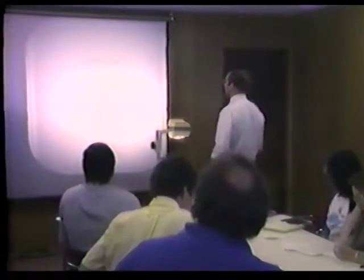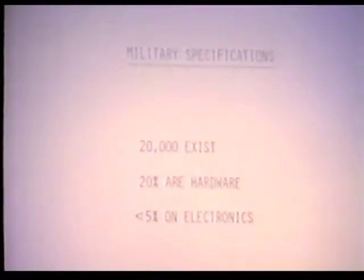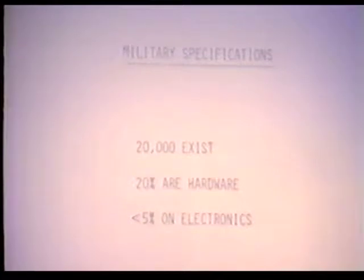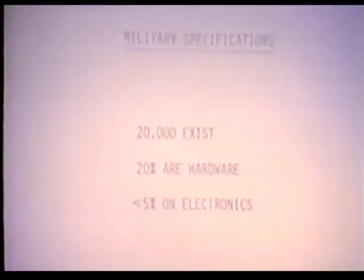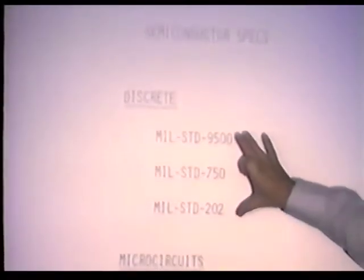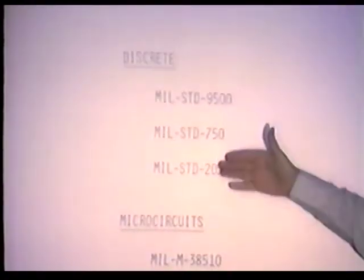There are 20,000 military specifications currently in existence. Twenty percent refer to hardware, and only 5% or less refer to electronics. If you've ever been involved in procuring devices and having them tested to mil-spec, you'd never believe it's fewer than 5%, because it seems like there's a mil-spec at every turn. The real workhorses for discrete devices and microcircuits — meaning monolithic, multiple-function devices — are covered primarily in these key specifications.